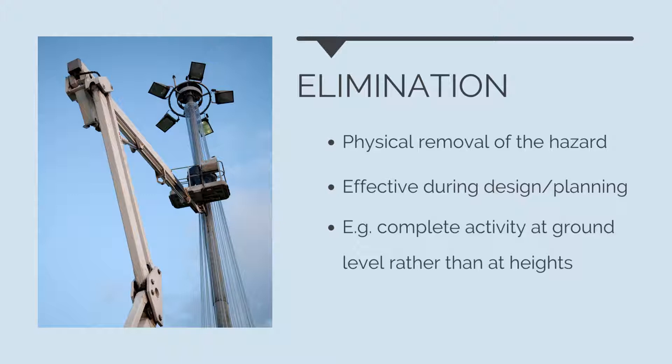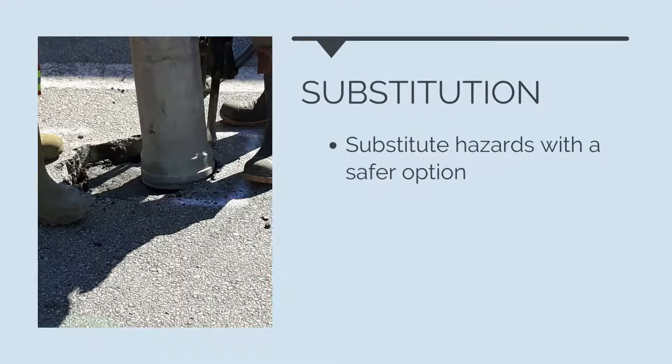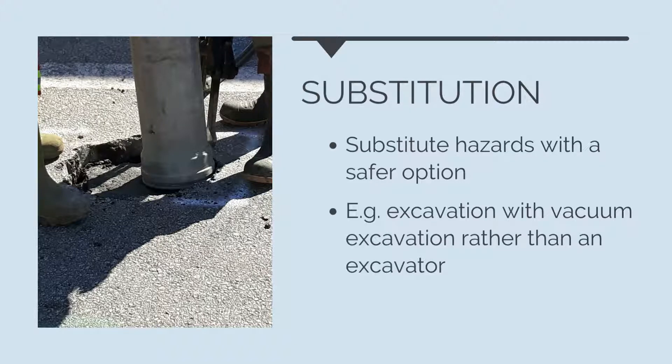If we are unable to eliminate the hazard, the next best control is to substitute the hazard with a safer option. For example, if our activity is excavation and the hazard is damage to in-ground gas or electricity services from an excavator, we could substitute this hazard by changing our construction methodology. We could use vacuum excavation, also known as non-destructive digging, to excavate without the risk of damaging services. There is still some risk, however it is significantly lower.